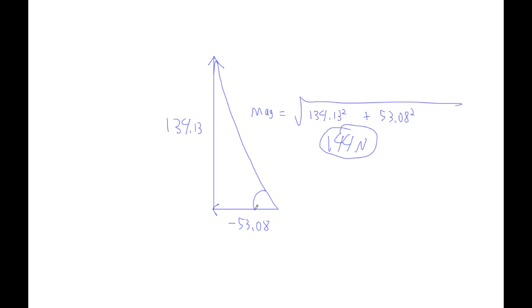And then this angle with the x-axis, you can find any angle you want, but you're going to draw me ultimately a picture like this, right? That angle is inverse tan of 134.13 divided by 53.08. So let's try that. 134.13 divided by 53.08. This should be a big angle. Indeed, 68.4 degrees.